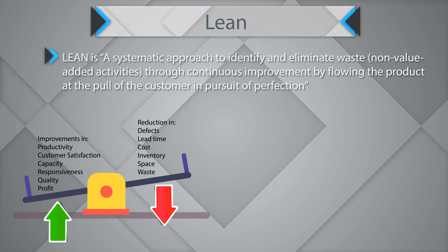Anything that is not of value to the customer is a waste. Through Lean, we look at reviewing the process for any non-value-adding activities, looking at establishing pull by the customer and creating in pursuit of perfection. We will discuss the seven wastes in the later part of the video.